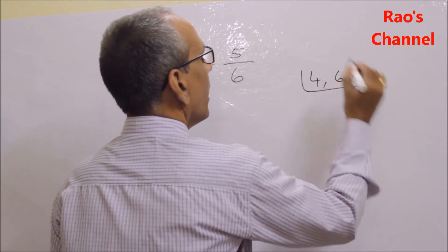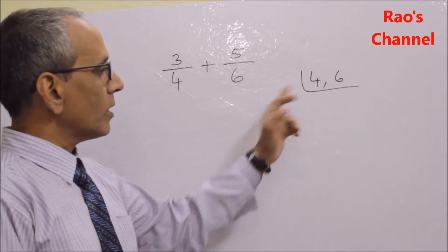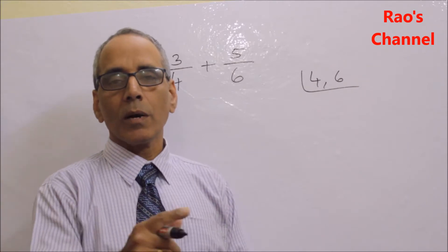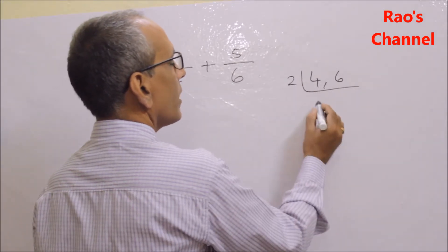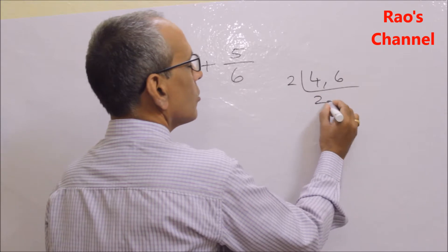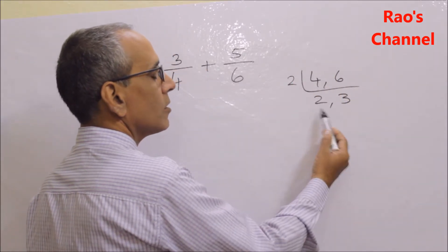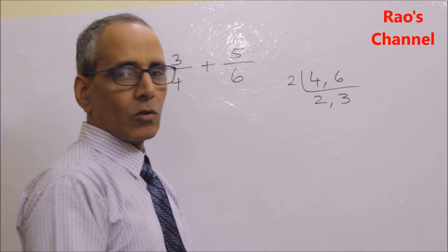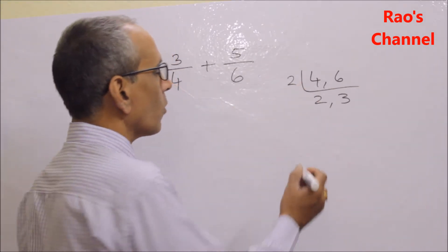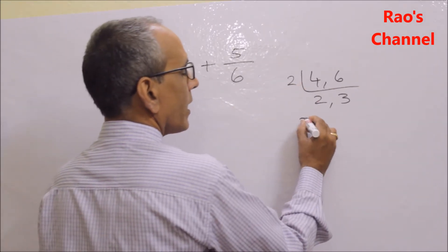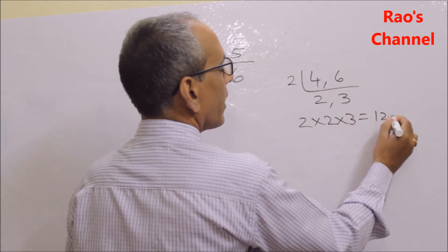Let's find the LCM of 4 and 6 in the rough column. In this case, 4 and 6 are not co-primes — they have the common factor 2. Dividing: 2 divides to give 2 and 3, which are co-primes. So the LCM is 2 × 2 × 3, which equals 12 again.